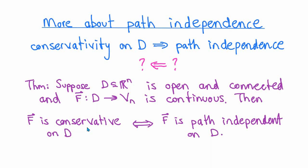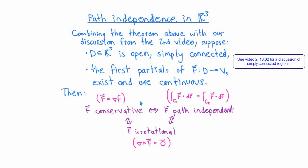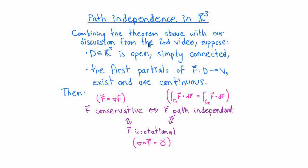If we're working in three dimensions, we can take this one step further. From video 2, if D is open and simply connected and the first partials of F exist and are continuous, then F being conservative is equivalent to F being irrotational — meaning the curl of F is zero. Combining this with our characterization in terms of path independence, we see that conservativity, path independence, and being irrotational are all equivalent properties under these hypotheses.